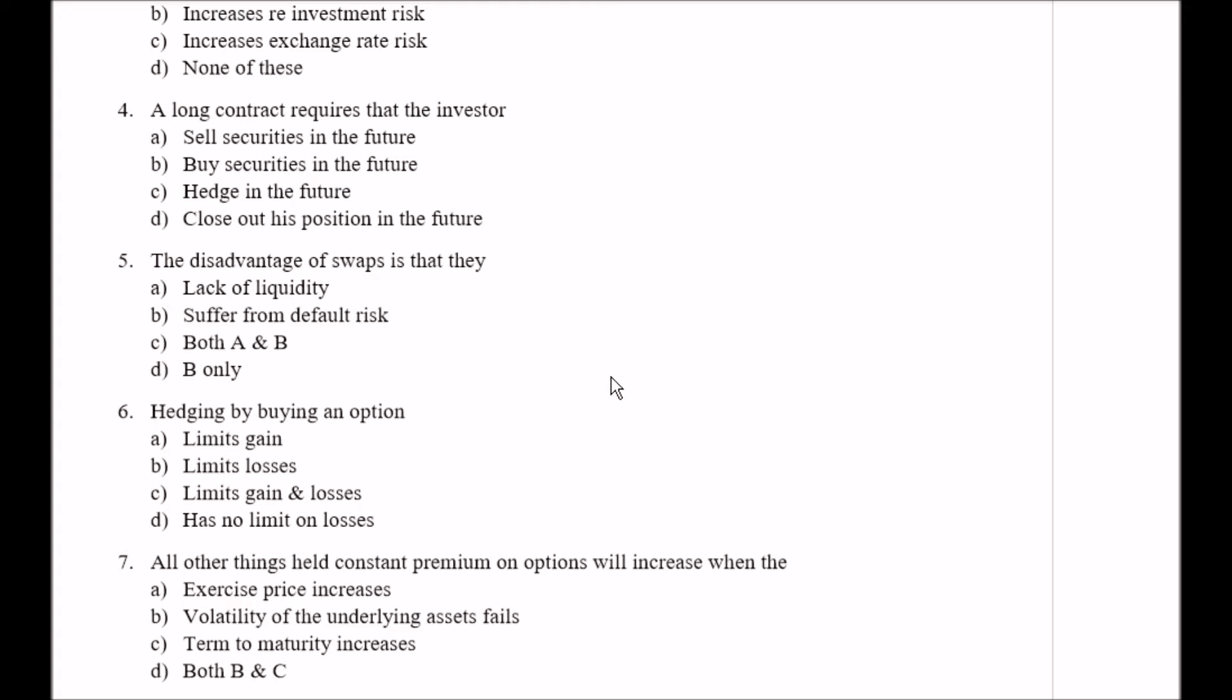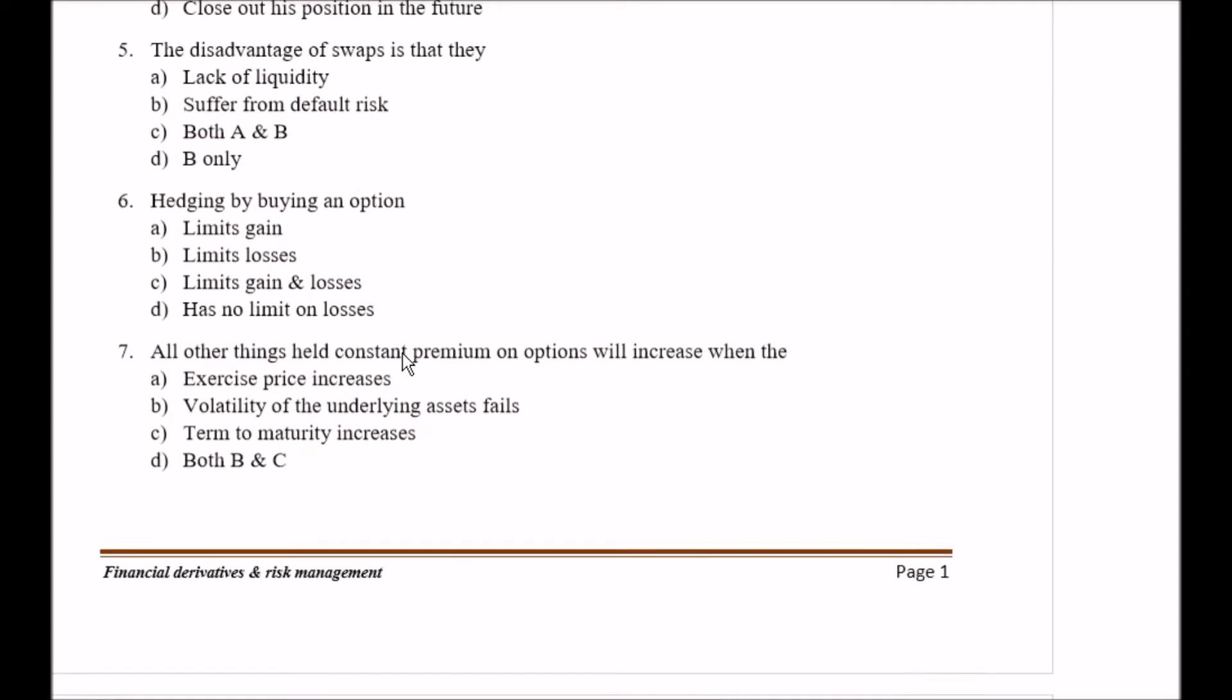Question number five: The disadvantages of swaps is that they Option A lack of liquidity, Option B suffer from default risk, Option C both A and B, and Option D is B only. Right answer here is Option C, that is both A and B, means Option A and Option B they both are included in it.